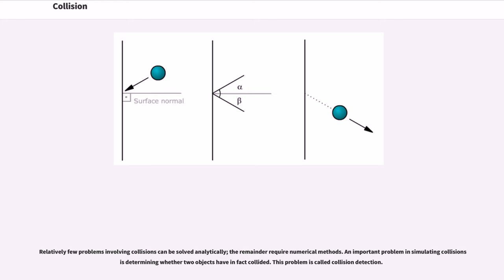Relatively few problems involving collisions can be solved analytically, the remainder require numerical methods. An important problem in simulating collisions is determining whether two objects have in fact collided. This problem is called collision detection.